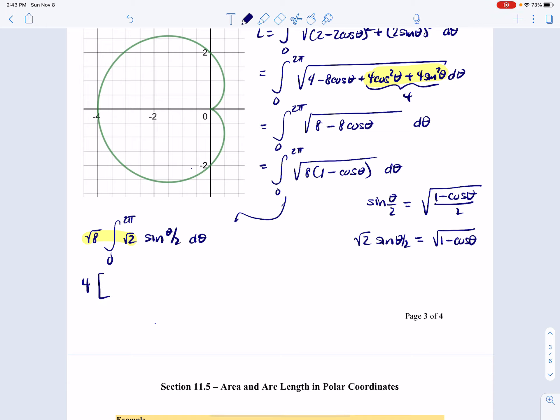And taking the antiderivative of sine of theta over 2 is negative 2 cosine theta over 2, evaluated at pi and 0.